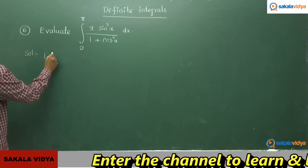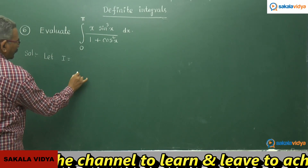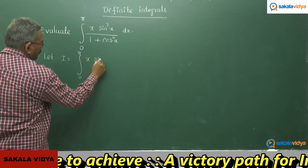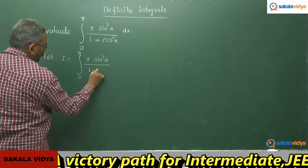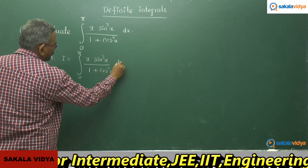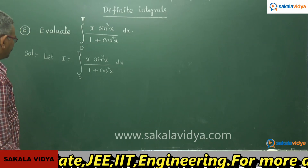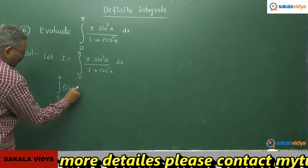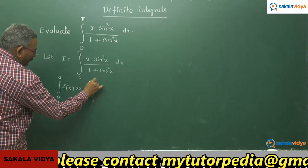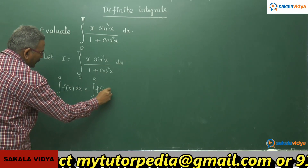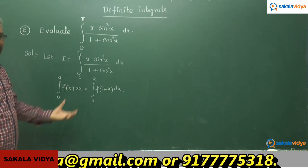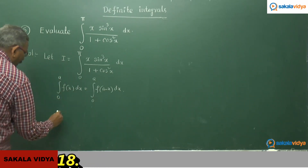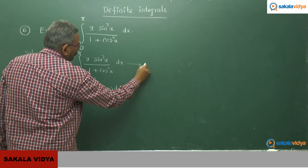First, let us say I equals the integral from 0 to pi of x·sin³x divided by (1 + cos²x) dx. Call this equation 1. Now applying the rule: integral 0 to a of f(x) dx equals integral 0 to a of f(a minus x) dx — one of the important properties we have studied on definite integrals.